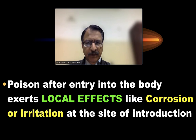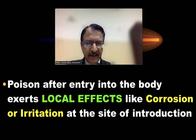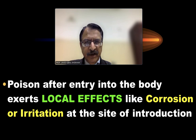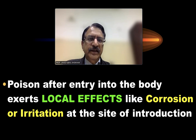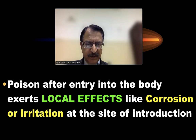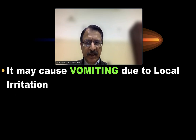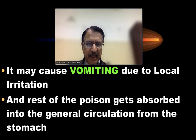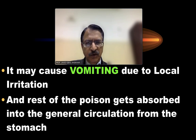Before absorption, the poisons when they enter into the body can exert local actions. Usually these are the irritants and the corrosives. The corrosives corrode and ulcerate the tissues they come in contact with, because they are strong irritants. Mild irritants show erythema and various other symptoms, acting locally on the site of contact. This can induce vomiting due to irritation, so the ingested poison can be vomited out, while the remaining poison is absorbed into general circulation from the stomach.